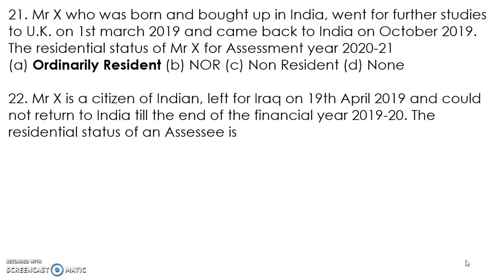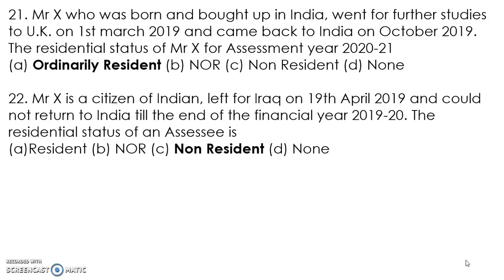Next question: Mr. X, a citizen of India, left for Iraq on 19th April 2019 and could not return to India till the end of financial year 2019-20. Residential status for assessment year 2020-21? In the previous year commencing 1st April and ending 31st March, he was not in India at all. He does not fulfill the basic condition of 182 days and does not fulfill any additional condition. So his residential status is non-resident — answer is C.